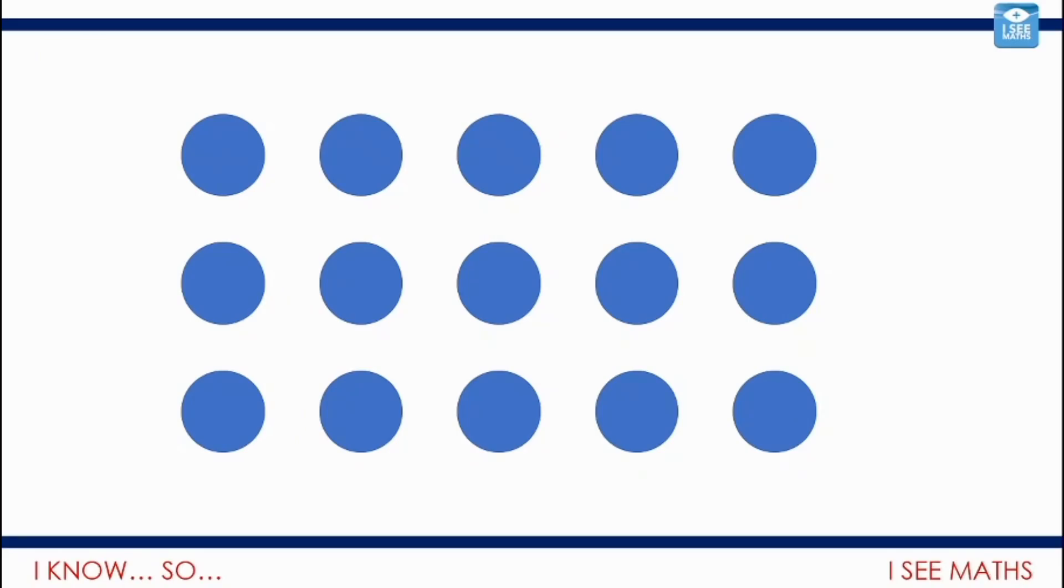When you were younger, perhaps you'd have first seen multiplication represented using what we call an array. So, here we've got this pattern of dots. 5 in the top row. So, 3 rows of 5. 3 rows of 5 is 15. Or 5 lots of 3 is 15.